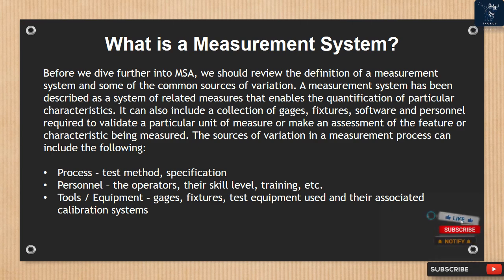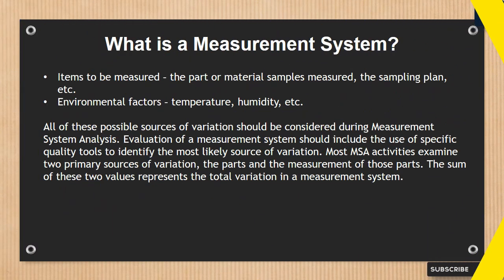The sources of variation in a measurement process can include the following: process, test method, specification; personnel — the operators, their skill level, training, etc.; tools and equipment — gauges, fixtures, test equipment used and their associated calibration systems; items to be measured — the part or material samples measured, the sampling plan, etc.; and environmental factors — temperature, humidity, etc. All of these possible sources of variation should be considered during measurement system analysis.